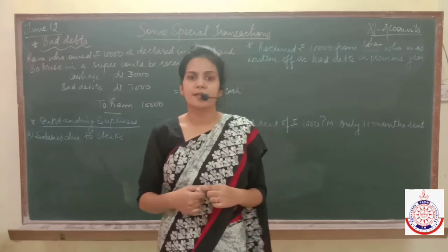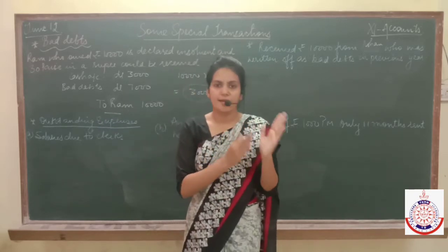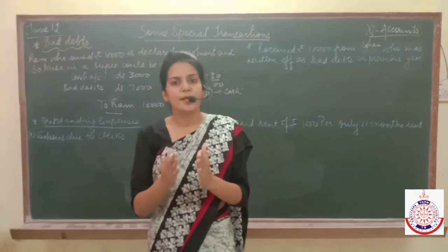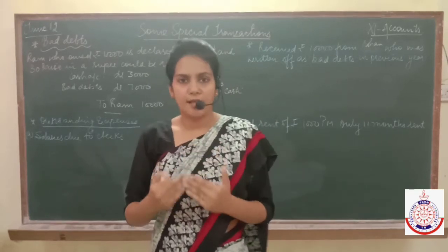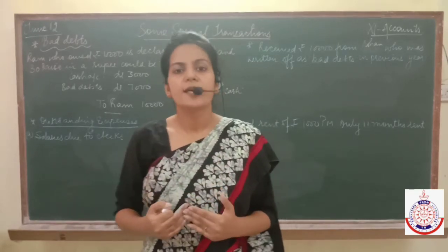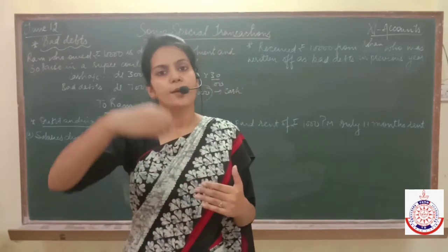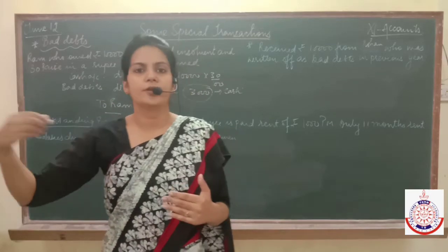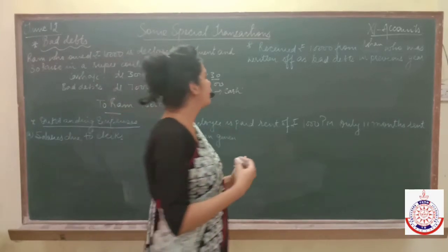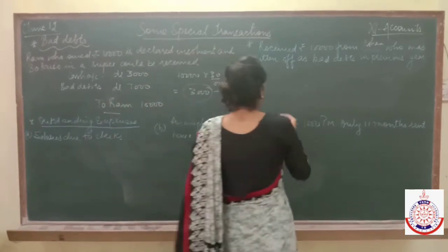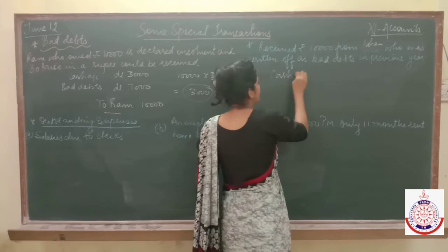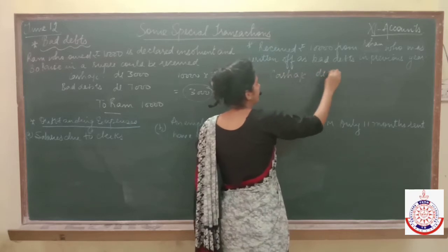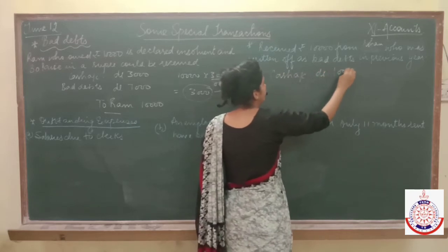Rohan was declared bad debts in the last year. This year he paid rupees 10,000 to us, so he becomes bad debts recovered. Since cash will come into the business, write cash account debited 10,000.